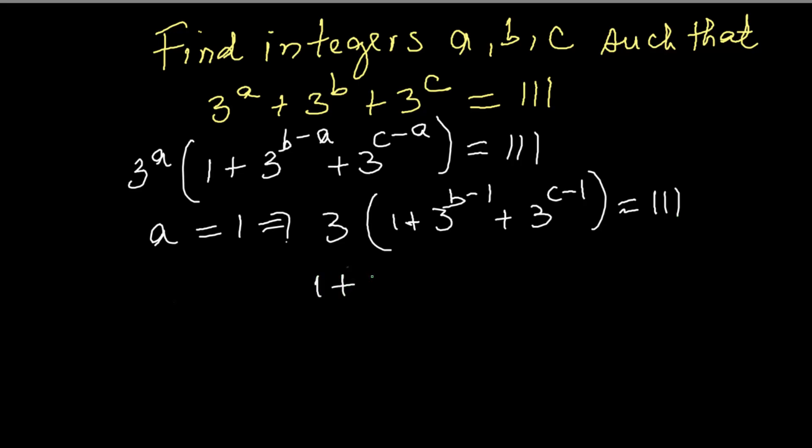Divide both sides by 3. We now have 1 plus 3 raised to the power B minus 1 plus 3 raised to the power C minus 1 equals 37. Subtract 1 from both sides.